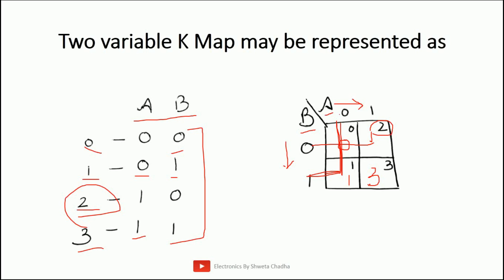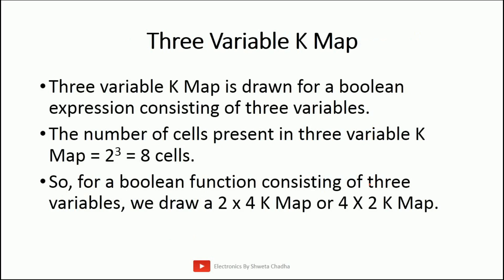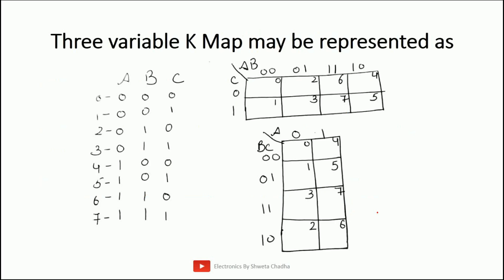Next is the 3-variable K-map. In a 3-variable K-map, you are going to have 8 cells, because 2 raised to the power of 3 equals 8, and you can simplify a Boolean expression consisting of 3 variables. For the implementation of a K-map having 3 variables, we can have 2 types of configurations: one is 2×4 and the other is 4×2. You can implement the Boolean expression with either type of K-map.